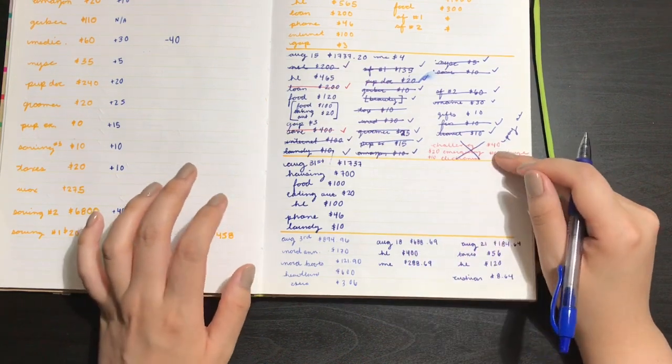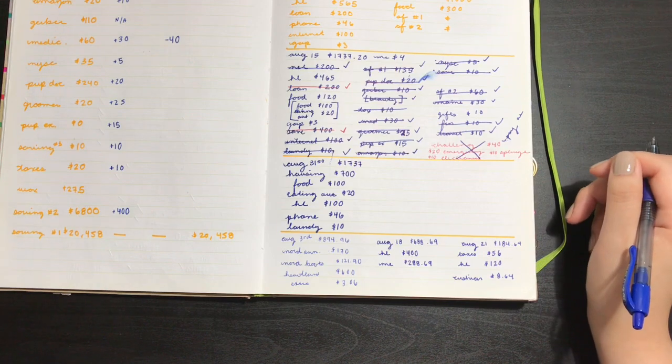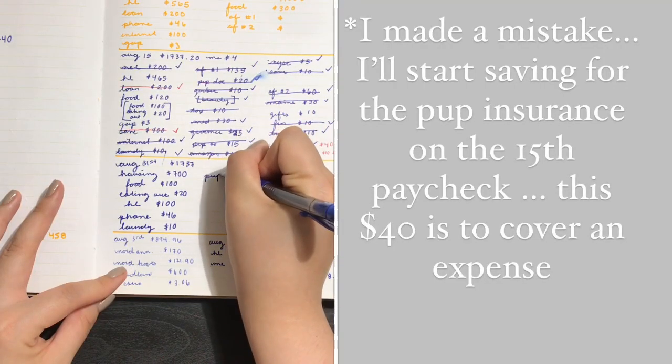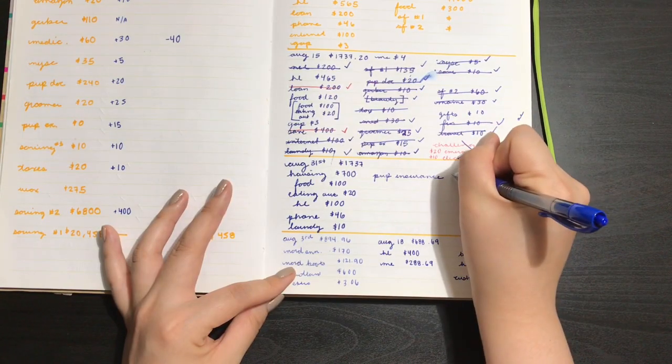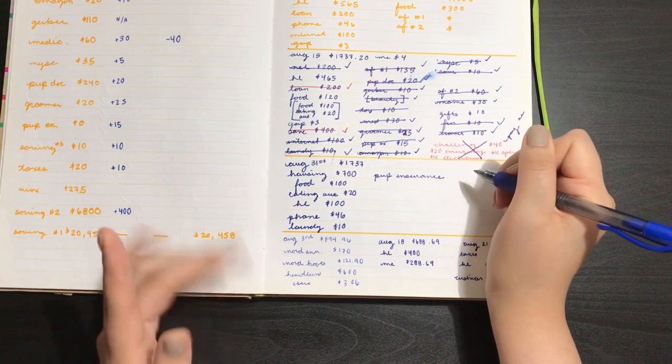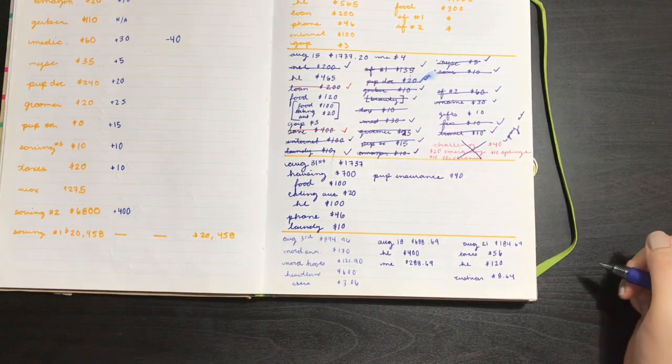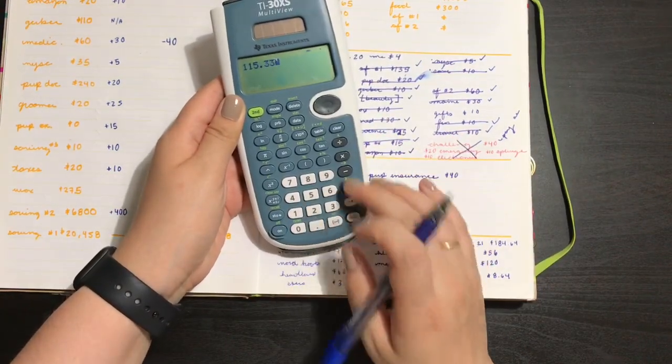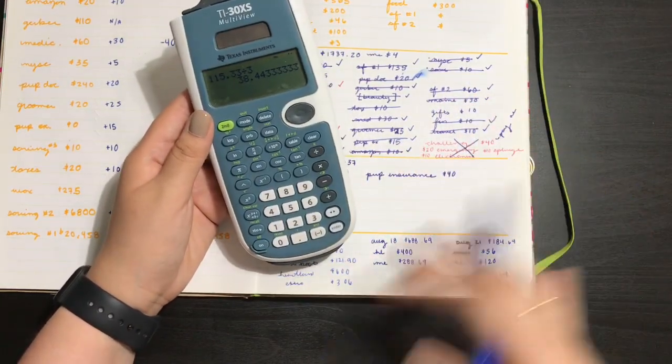Usually, I would say I have a challenge of $40, but this is no longer going to be a challenge. I am actually going to save these $40 for my puppy's insurance. That's the new bill I have. So, I'm going to put pup insurance. It's going to be $40.